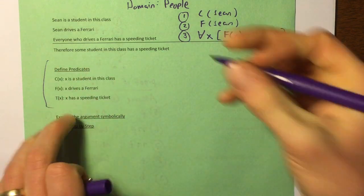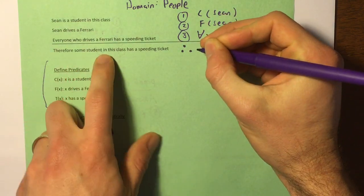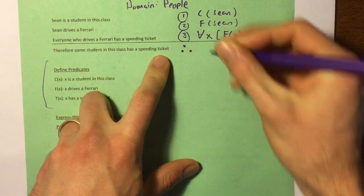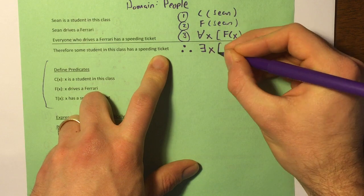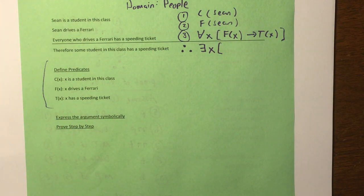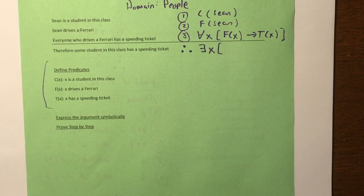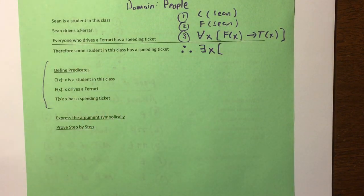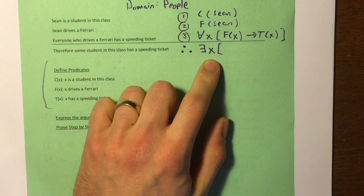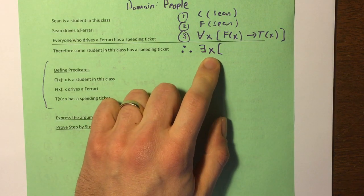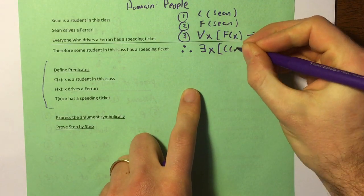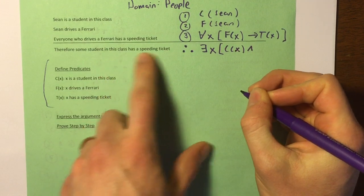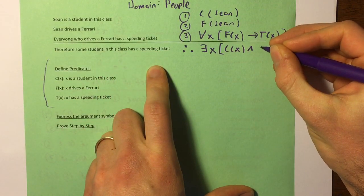Now the conclusion — therefore, some student in this class has a speeding ticket — so this is going to be: there exists X. In this case, we don't want to use the implication, because then you could satisfy existence with a person who's not in the class, and that would be vacuous. Instead, we just want to say there exists a person X who is in this class, so C of X, and they have a speeding ticket, so and T of X.